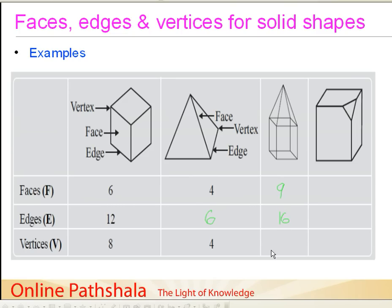How many vertices do we have for this figure? We have four vertices in the bottom, another four on the upper level, and of course one more vertex at the top point. So that is eight plus one, which is nine. We have nine vertices.